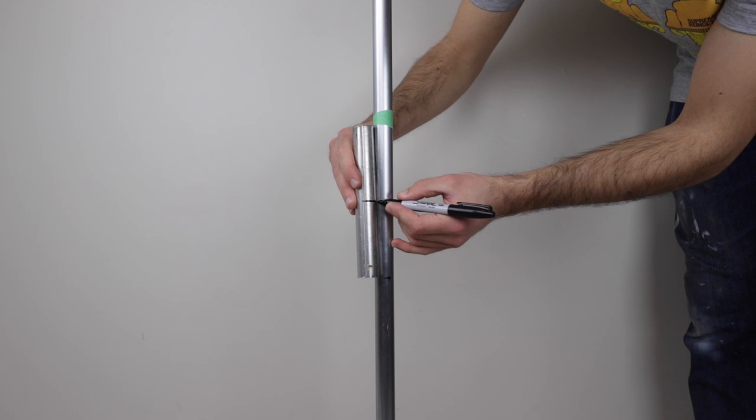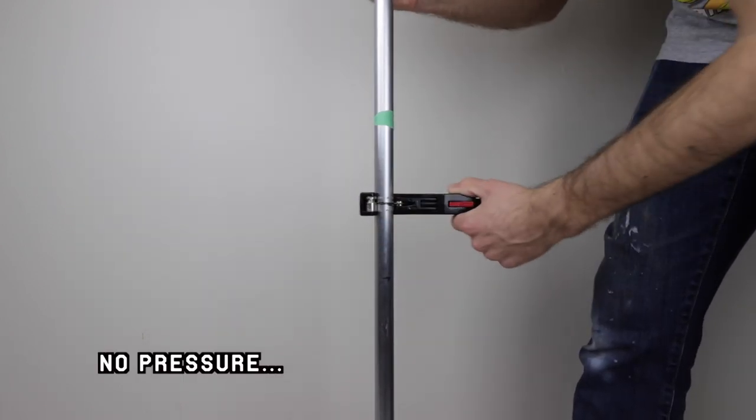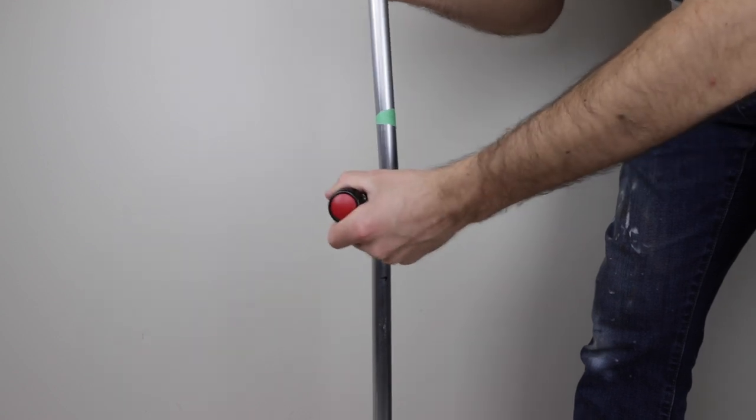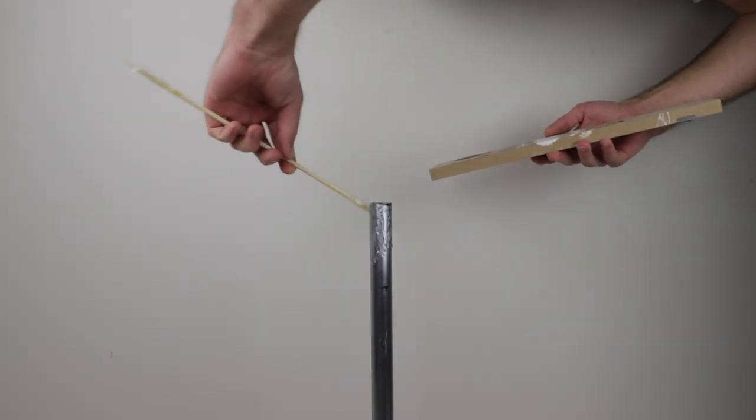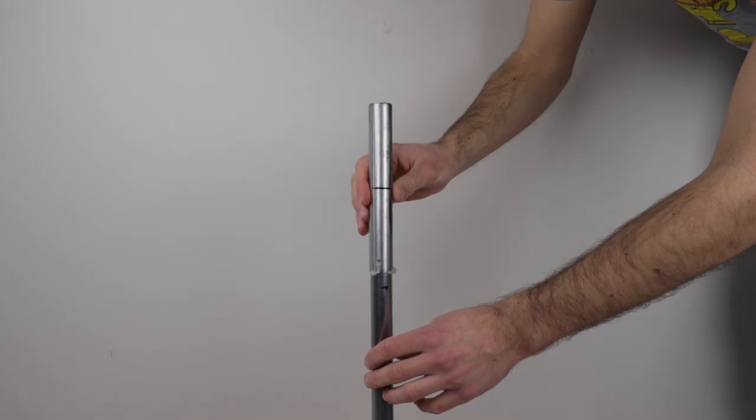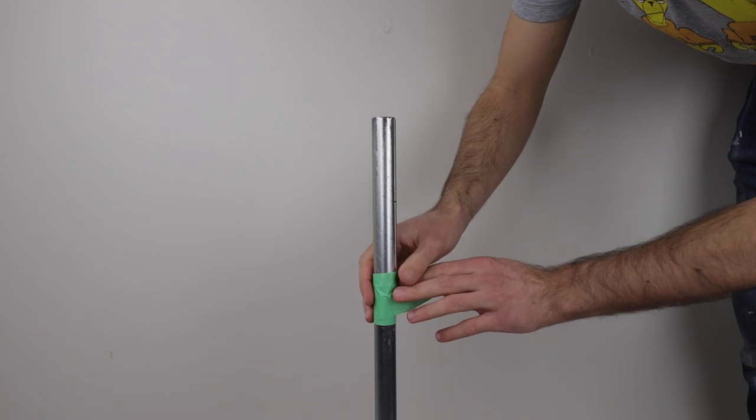I marked off the center of the bridge piece, then carefully cut the conduit in half. I mixed up some two-part epoxy and applied it to the bottom half of the conduit before installing the new bridge. And I added some tape to hold everything in place while it cured.